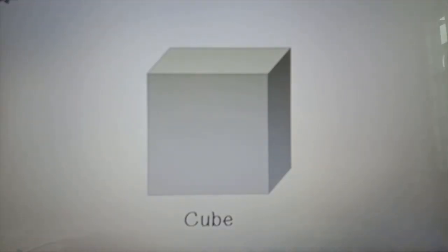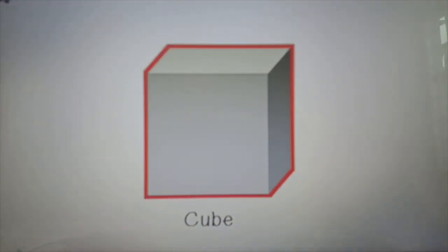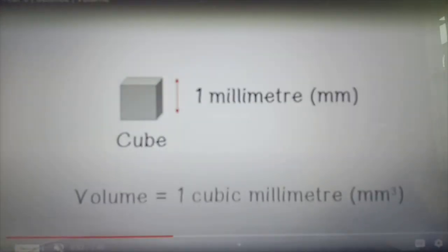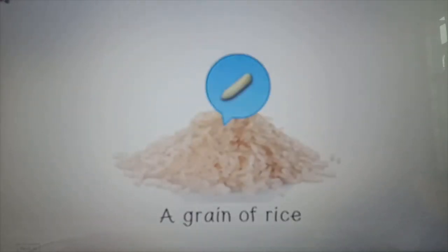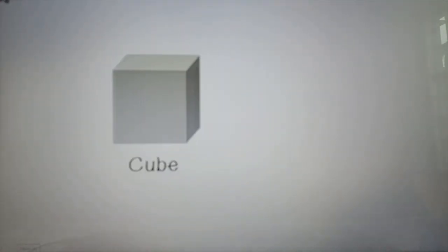Let's understand more about volume using a cube. A cube has a shape like a box with sides of equal length. A cube of size 1 millimeter has a volume of 1 cubic millimeter. Small objects such as a grain of rice are usually measured in cubic millimeters.